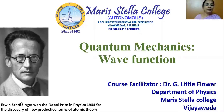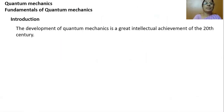Erwin Schrödinger won the Nobel Prize in Physics in the year 1933 for the discovery of a new productive form of atomic theory — the fundamentals of quantum mechanics. The development of quantum mechanics is a great intellectual achievement of the 20th century.